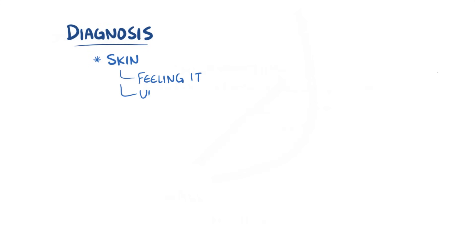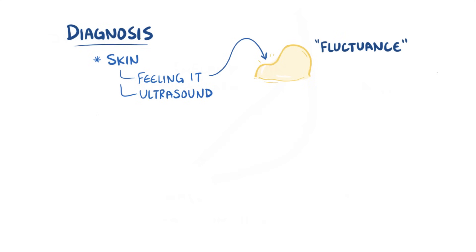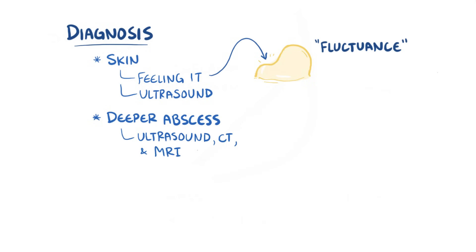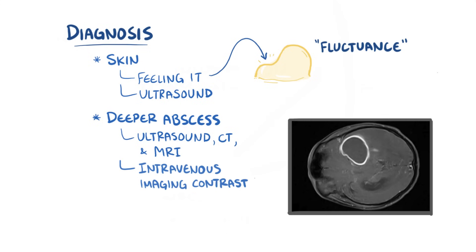Diagnosing an abscess in the skin or soft tissue is usually done by feeling it, or sometimes with an ultrasound. When an abscess is filled with enough fluid, it becomes possible to feel the fluid move around — this is called fluctuance. A deeper abscess is usually diagnosed through imaging studies like ultrasound, CT, or MRI scans. Intravenous imaging contrast can really stand out around an abscess, since the small blood vessels around the abscess remain dilated and leaky due to the constant inflammatory response. This is called ring enhancement, since it lights up the blood vessels around the abscess.